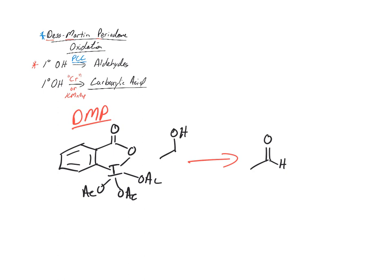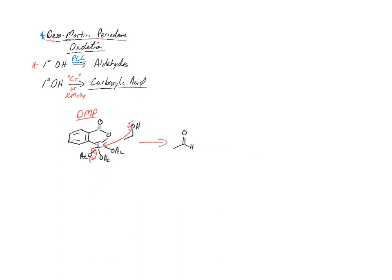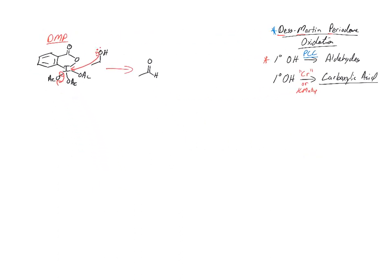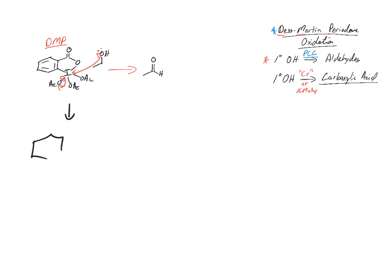The first thing that's going to happen, with the iodine with all those bonds to oxygen, that actually makes the iodine pretty delta plus. So the oxygen actually attacks the iodine and kicks out one of the OAcs, the O-acetyls. Let's see if we can get some room here. So OAc, we've got to make sure we know what that is. This part right here, this is the AC part, and the O. So that's OAc.